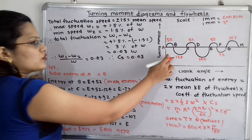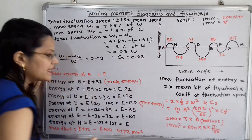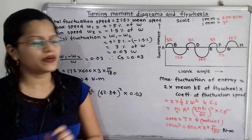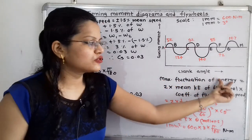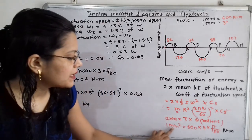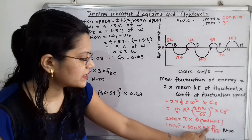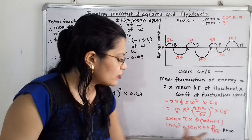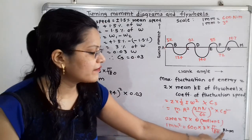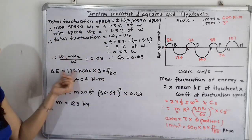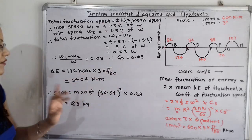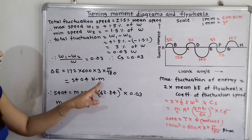The unit of 172 is millimeter square. We must convert this to Newton-meters using the scale relation: 1 mm² = 600 × 3 × π/180 Newton-meter. Therefore for 172 mm²: 172 × 600 × 3 × π/180 = 5404 Newton-meter. This value will be used in the formula.